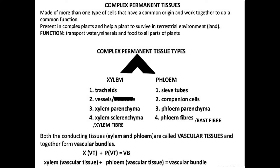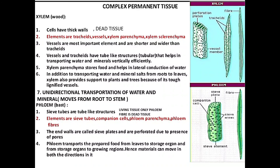Xylem transports water and minerals, and phloem transports food. Xylem and phloem together are called vascular tissue, and together they are called vascular bundles. Xylem cells have thick cell walls — they are dead tissues, tube-formed, with little perforations, so they can do lateral conduction.